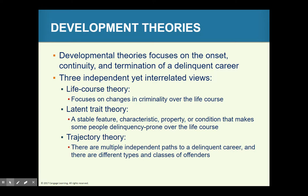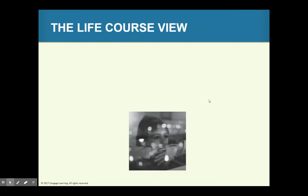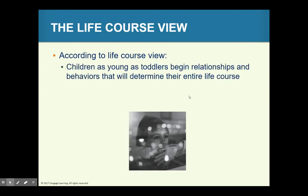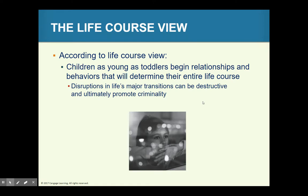Let's start with the life course view. Life course theories attempt to integrate social, personal, and environmental factors into explanations of the onset and persistence of a delinquent career. It is a developmental theory that really focuses on changes in behavior as people travel along the course of their lifetime, and how those changes affect crime and delinquency.